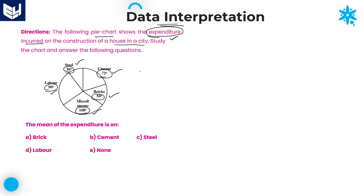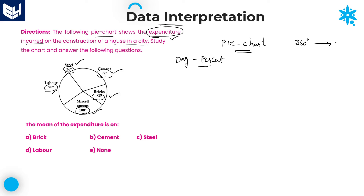Before going to the questions, I will tell you how to convert degrees to percentage and percentage to degrees. In pie chart problems, you must know both conversions. The entire pie chart is 360 degrees, which equals 100 percentage total. Based on this relationship, you can convert between degrees and percentage.